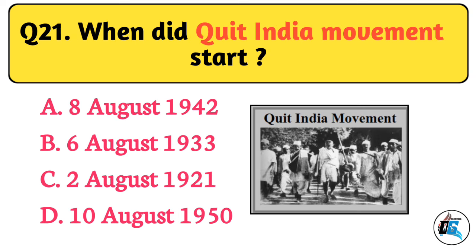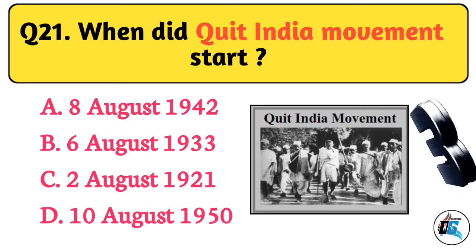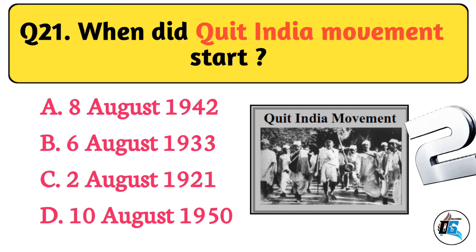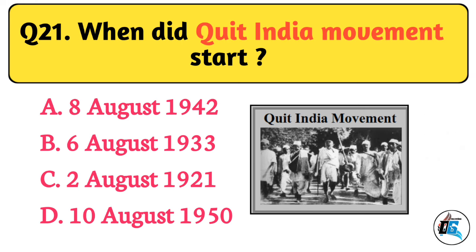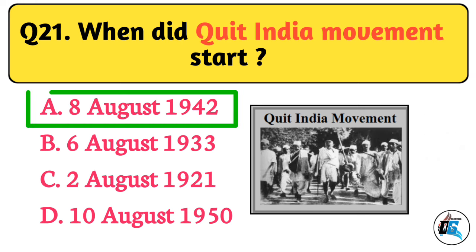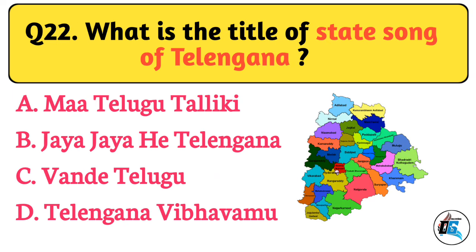Question No. 21. When did the Quit India Movement start? The right answer is Option A: 8 August 1942.